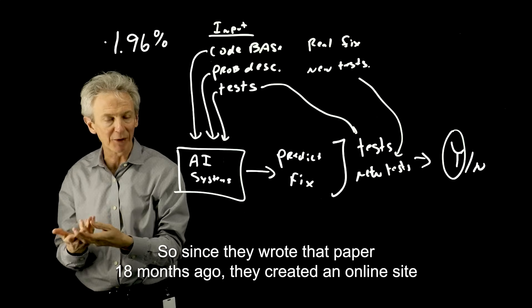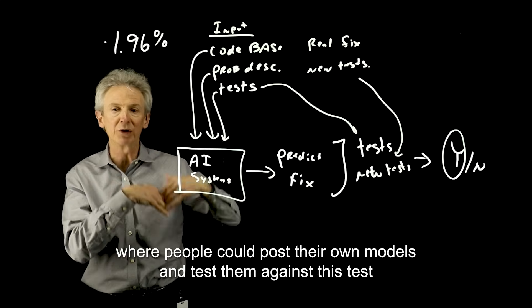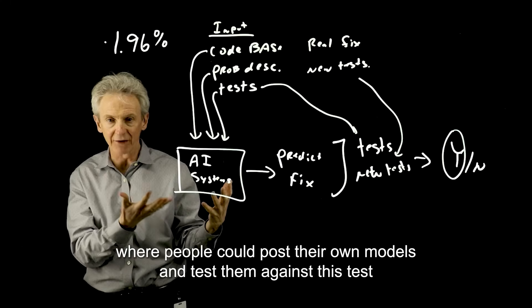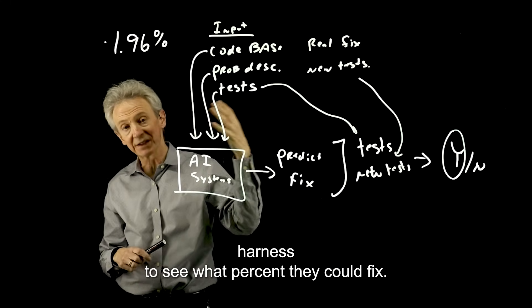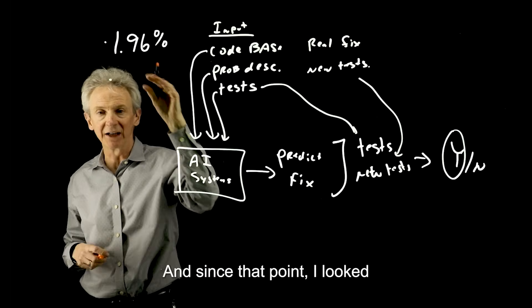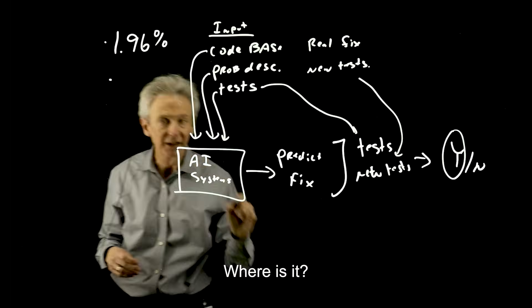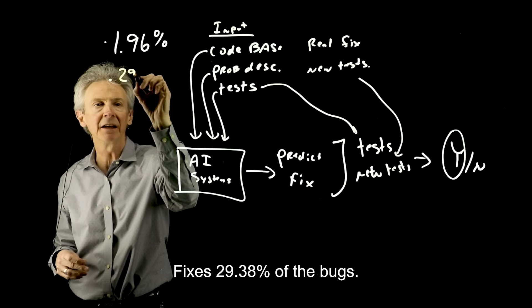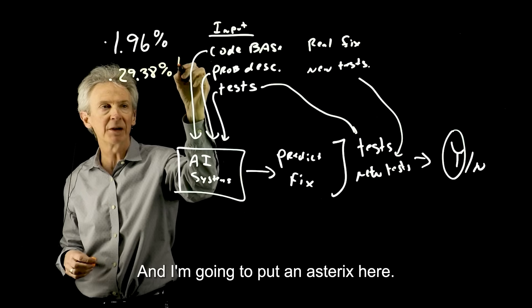So since they wrote that paper 18 months ago, they created an online site where people could post their own models and test them against this test harness to see what percent they could fix. And since that point, I look today, the top scoring model, where is it, fixes 29.38% of the bugs. And I'm going to put an asterisk here.